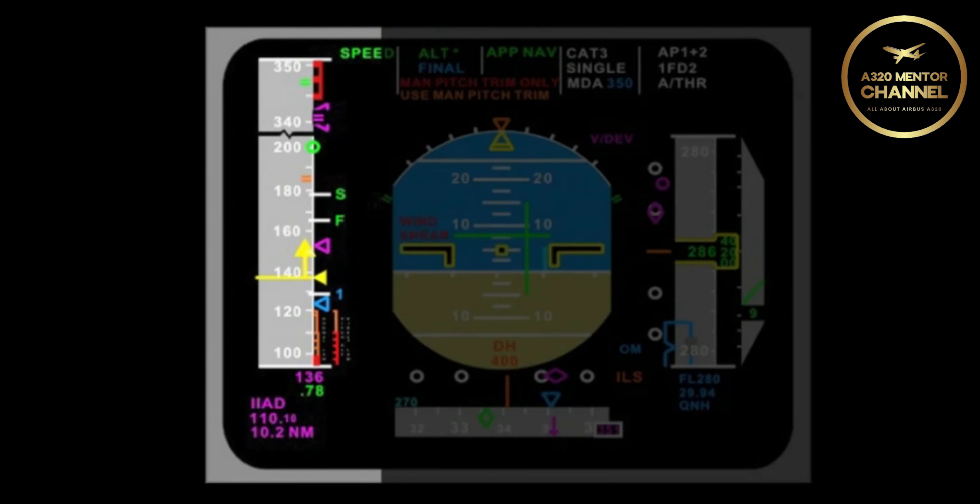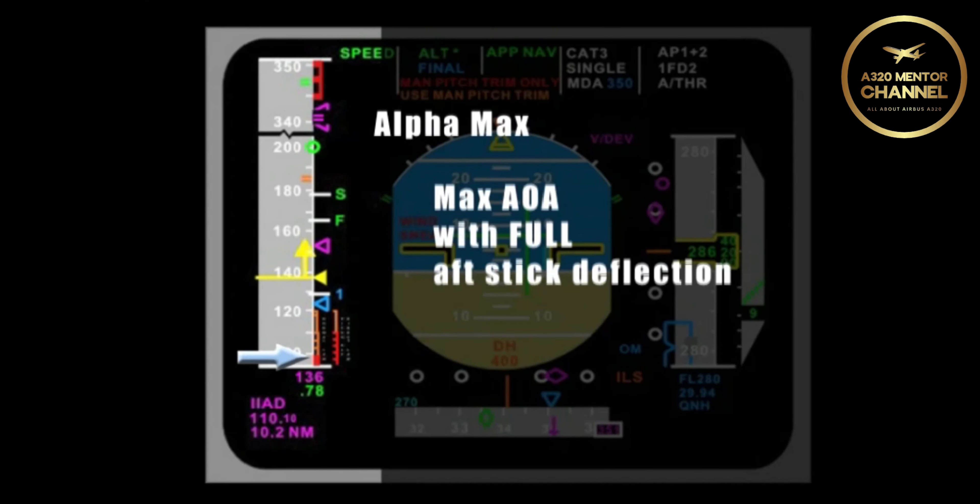Instead of pushing forward, you hold full aft stick and the speed deteriorates to the top of the red tape. What does that represent? Well, that's alpha max. What are you commanding in alpha max? That is the maximum AOA or angle of attack that you can get with full aft stick deflection.